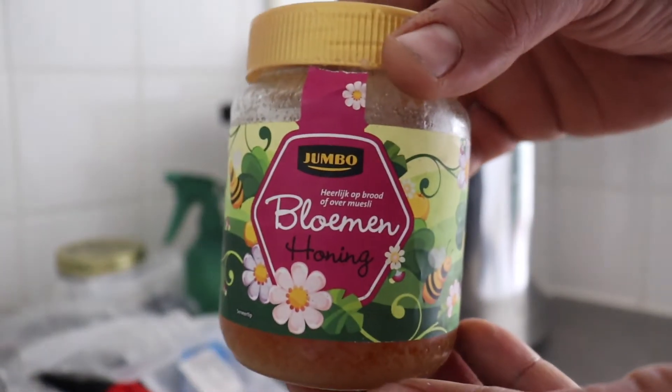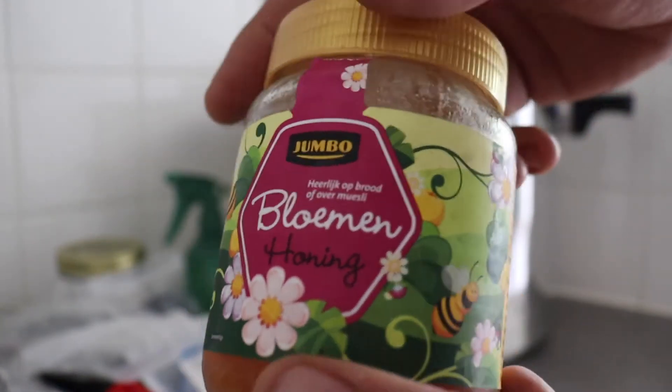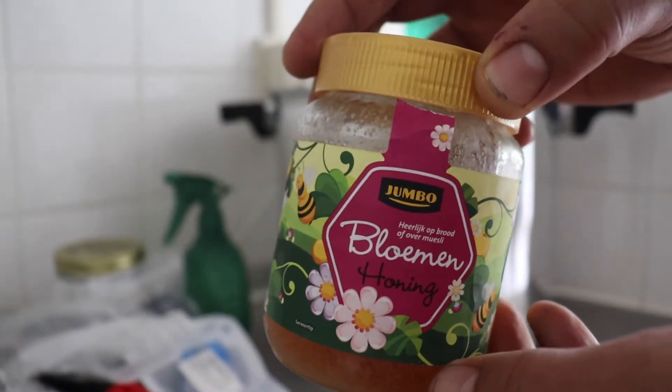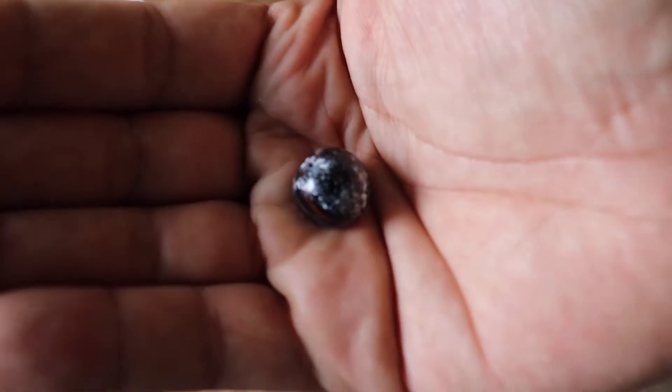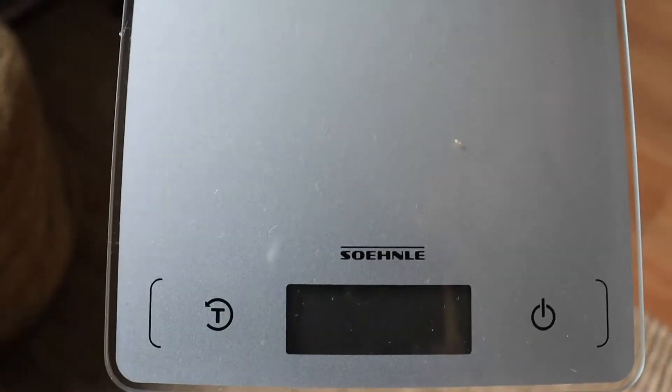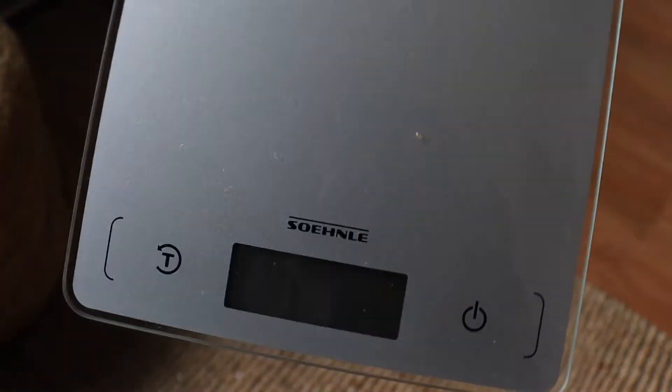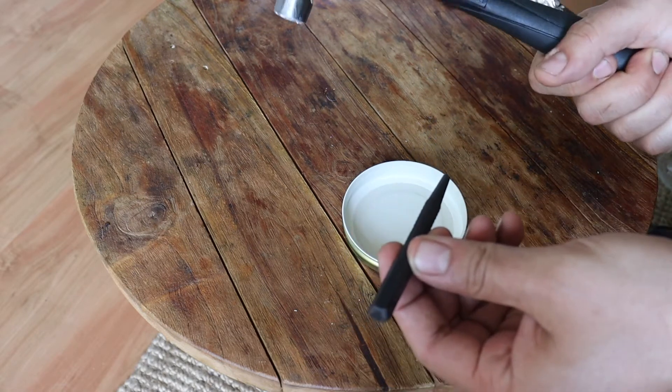We'll also need some honey. This is a nutritious medium for the mycelium to grow through. This is just regular blooming honey. A marble to stir the culture once it's grown. And a scale so we can measure things accurately. Or as accurately as possible. Alright.